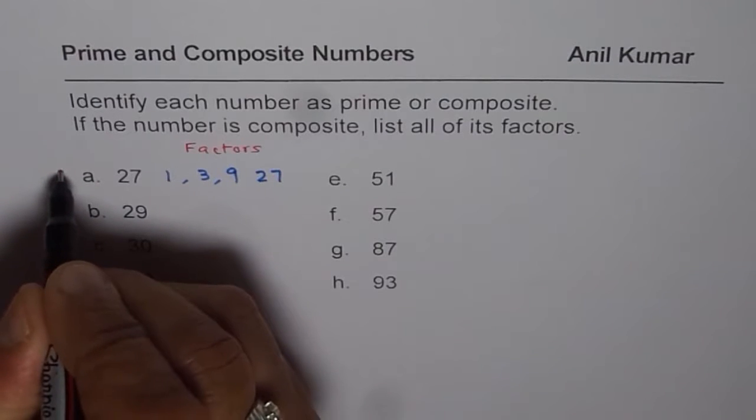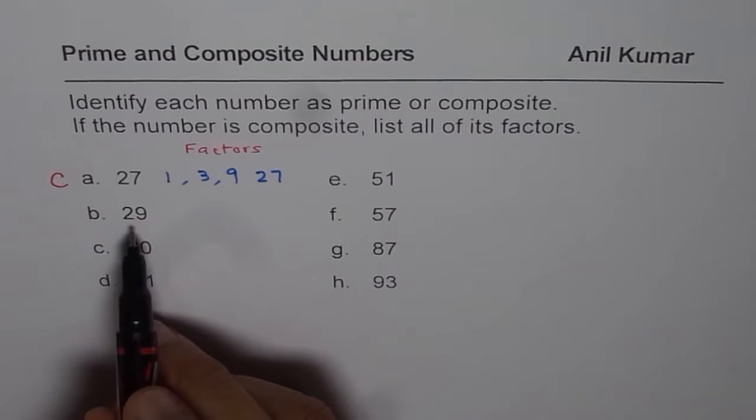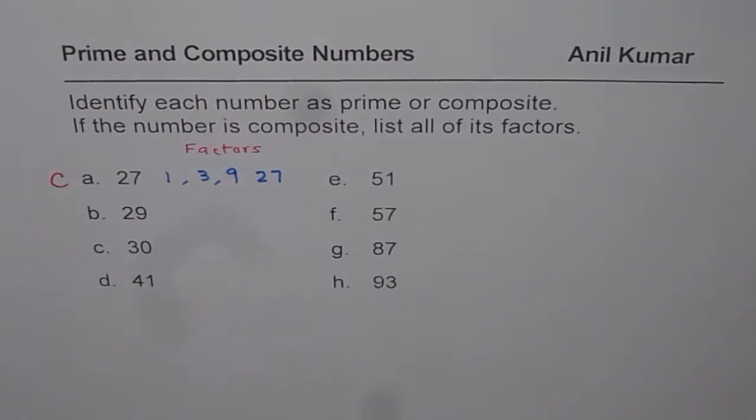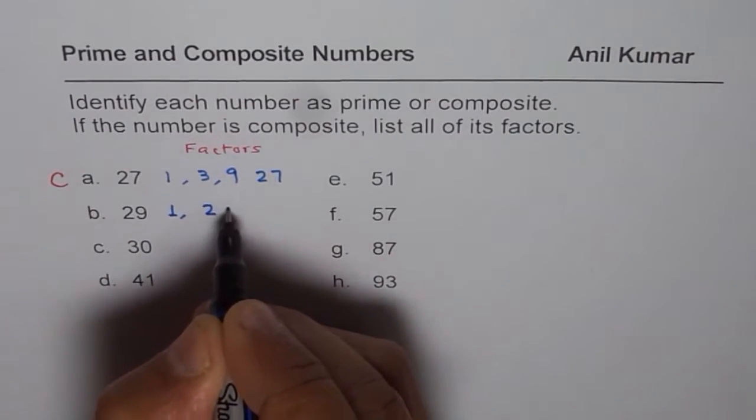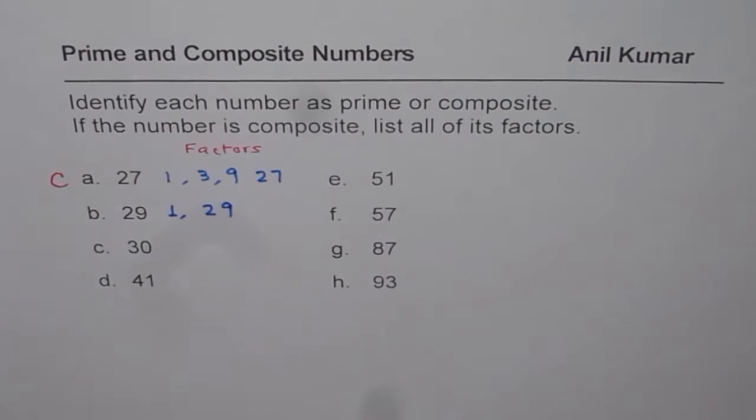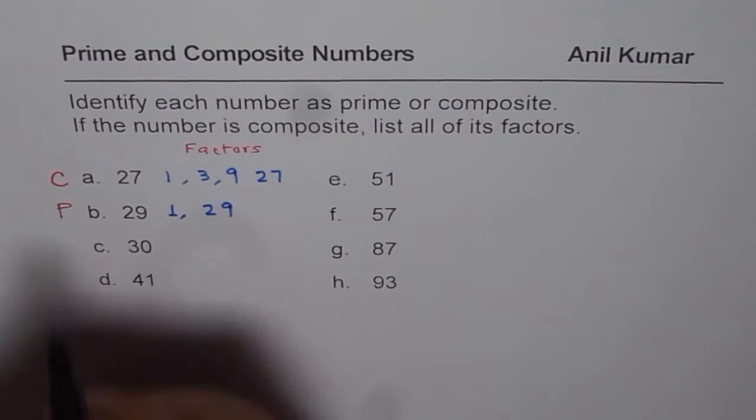So I'll write C for it. So it is a composite number. Now 29. As far as 29 is concerned, we cannot divide 29 by any other number. It has only 2 factors. The factors for 29 are 1 and the number itself, which is 29. And therefore, we'll call this as a prime number.